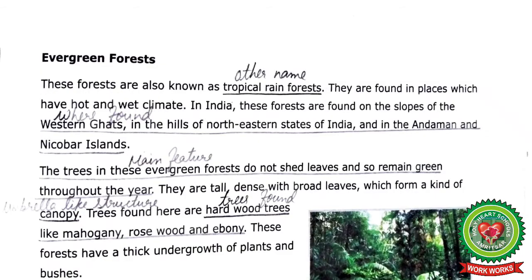Evergreen forests are also known as tropical rainforests. They are found in places which have a hot and wet climate. In India, these forests are found on the slopes of the Western Ghats, in the hills of the northeastern states, and in the Andaman and Nicobar Islands. The trees do not shed leaves and remain green throughout the year. They are tall and dense with broad leaves which form a kind of canopy. The trees here are hardwood trees like mahogany, rosewood, and ebony, with a thick undergrowth of plants and bushes.